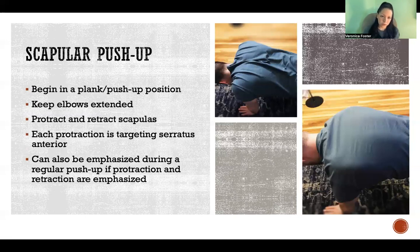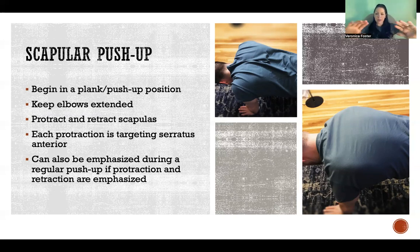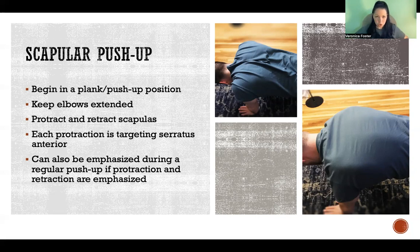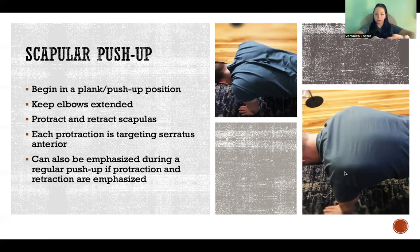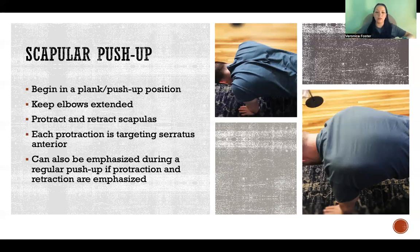An exercise to specifically target serratus anterior is called a scapular pushup. It's essentially a normal pushup, except you're not bending the elbows and not moving the glenohumeral joints. Instead of going up and down with the upper extremities, you keep the arms fixed and go up and down with the scapulas — protracting and retracting against gravity. When you protract — rounding your back as shown in the picture — you're concentrically contracting serratus anterior against gravity. As you return back, gravity allows the return into a retracted position, and serratus anterior contracts eccentrically to control that descent.